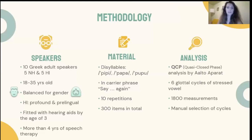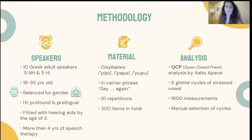Quasi-closed phase or QCP analysis was employed for voice source estimation as provided by AaltoAparat. QCP is a method inspired from closed phase analysis — the estimation of the vocal tract during the closed phase of the glottis. Compared to closed-phase covariance-based methods, the proposed technique uses weighted linear prediction to exploit all samples of an analysis frame of successive pitch periods, emphasizing samples located in the closed phase. The analysis was conducted on six total cycles of the stressed vowel per syllable repetition, giving 1800 measurements in total. Although the analysis was automatic, all cycles were manually selected to avoid problematic cases such as uneven, incomplete, or missing cycles, which sometimes occurred mainly for speakers with hearing impairment.